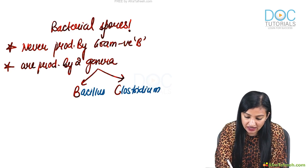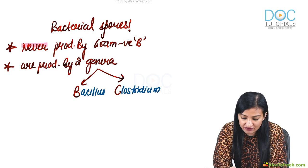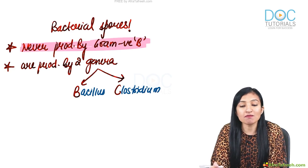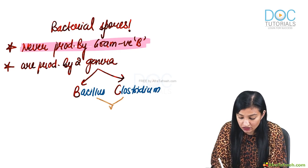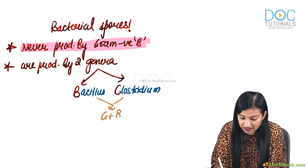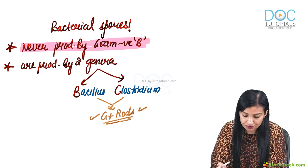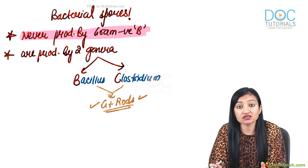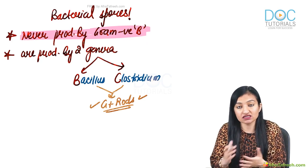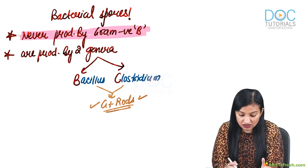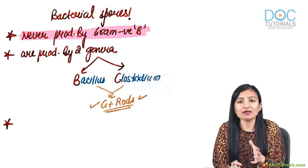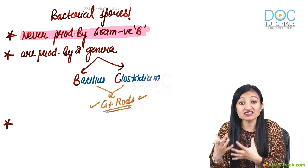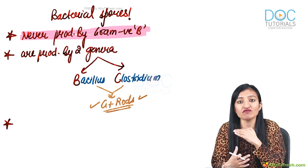Since bacterial spores are never produced by gram-negative bacteria, by default Bacillus and Clostridium have to be gram-positive — these are gram-positive rods. And bacterial spores are very, very resistant kinds of structures which have got a very long life.